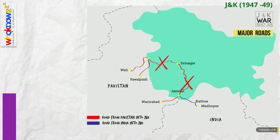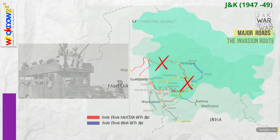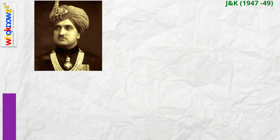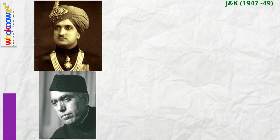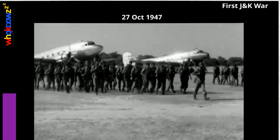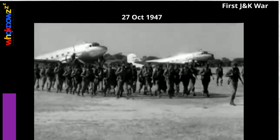Shortly thereafter, Pathan tribesmen and regulars dressed as tribesmen from the northwest frontier province of Pakistan crossed the border and entered Kashmir. The invaders made rapid progress towards Srinagar. The Maharaja of Kashmir wrote to India asking for military assistance. India required the signing of an instrument of accession and the setting up of an interim government headed by Sheikh Abdullah in return. The Maharaja complied. Indian troops reached Srinagar by air on 27th October 1947 in a nail-biting turn of events, and what ensued was the first war between India and Pakistan. Indian troops secured Jammu, Srinagar, and the valley itself during the first Kashmir war.